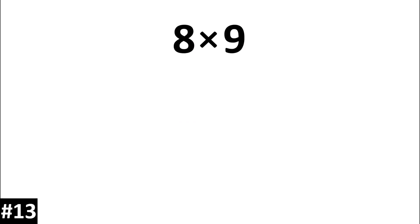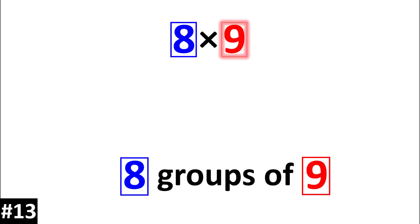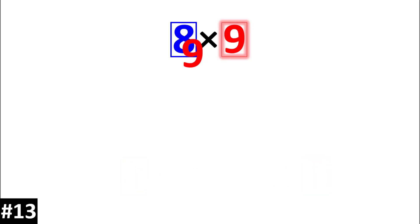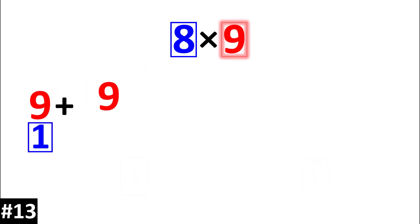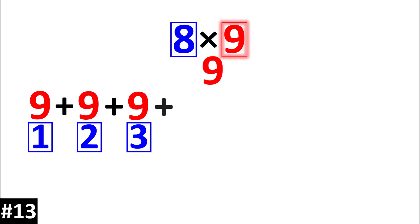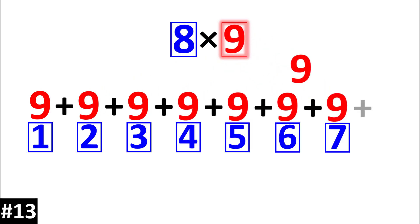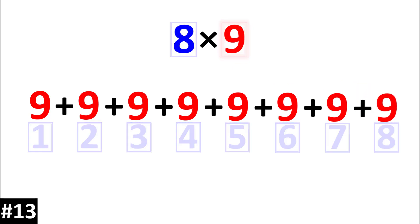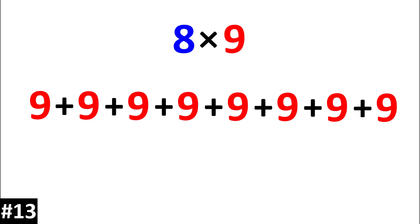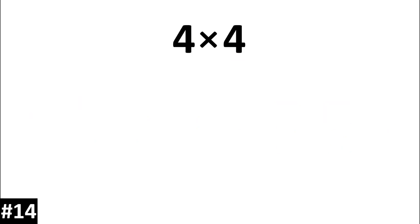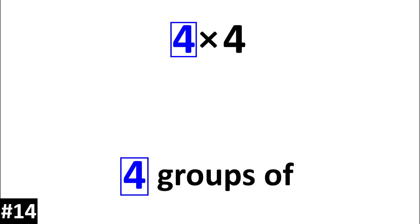Eight times nine is eight groups of nine. Four times four is the same thing as four groups of four.